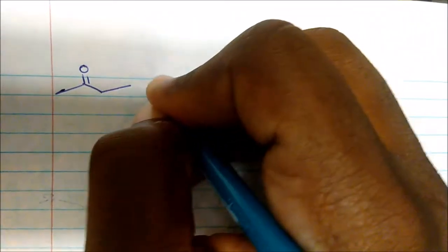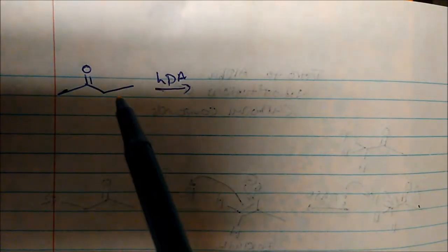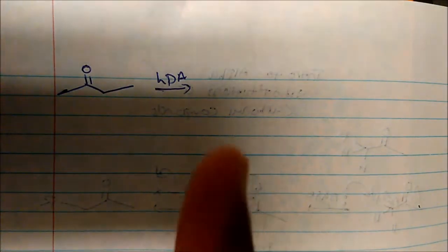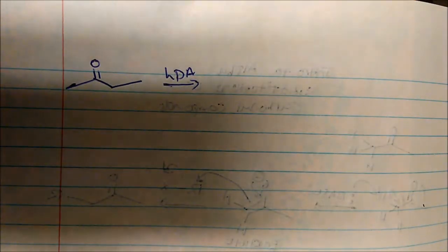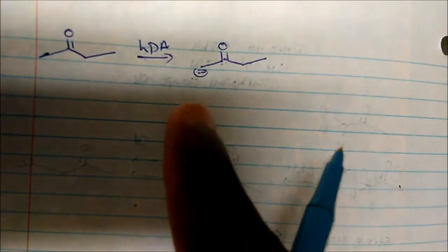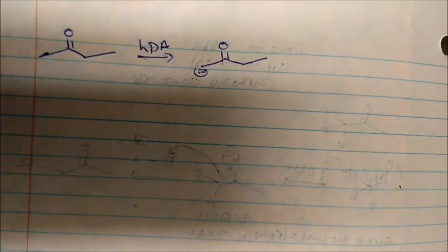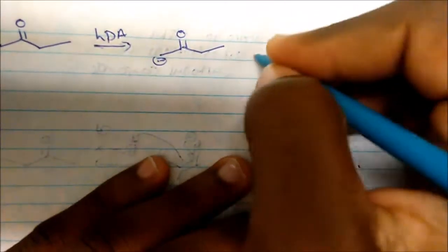If I take this and add LDA, where's my alpha carbon? Notice that I have technically two alpha carbons, but only one is correct for the chemistry that we need. The terminal alpha carbon hydrogens will always be more acidic than internal hydrogens. Therefore, when I add LDA, I will actually get the deprotonation at the terminal end. That's very important to remember, because putting the negative charge here would not work.